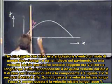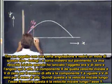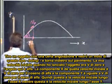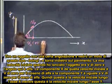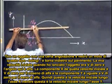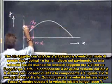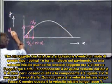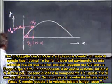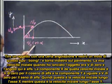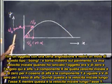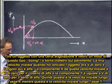My initial speed when I threw it was V zero, and the angle is alpha. The x component of that initial velocity is V zero cosine alpha, and the y component equals V zero sine alpha. So V zero cosine alpha is the initial velocity in the x direction, and V zero sine alpha is the initial velocity in the y direction.